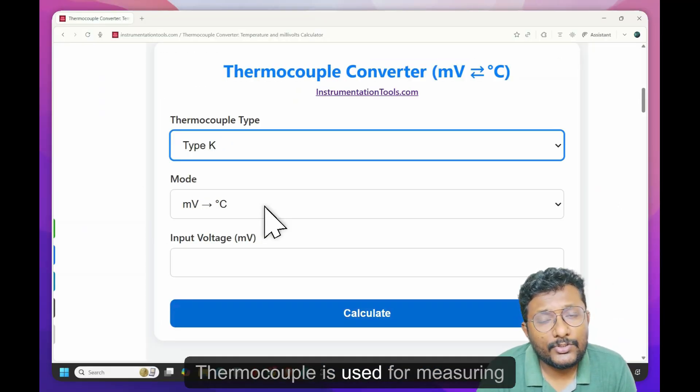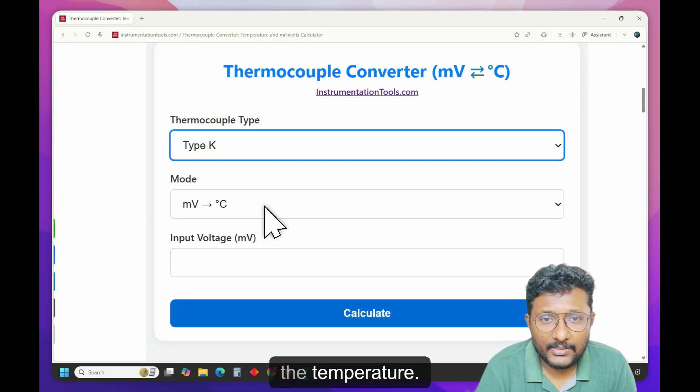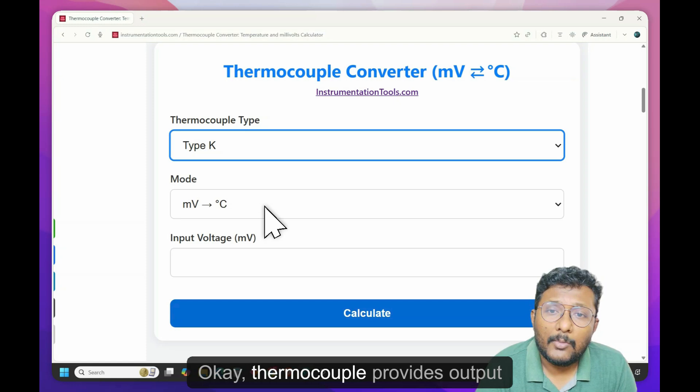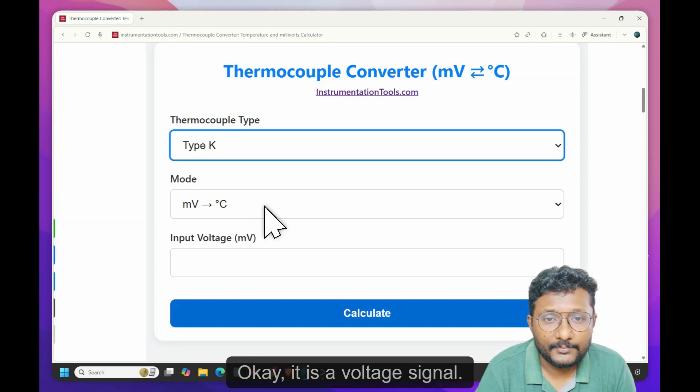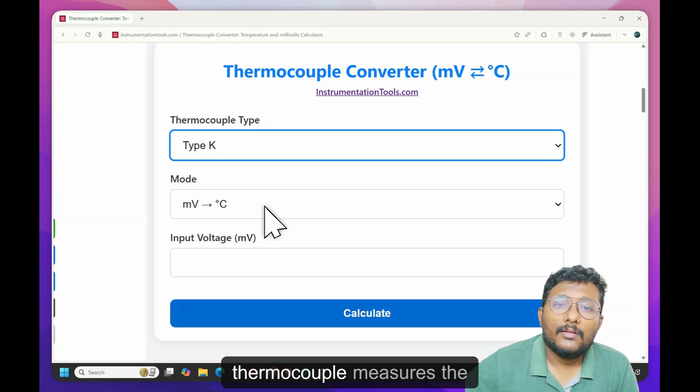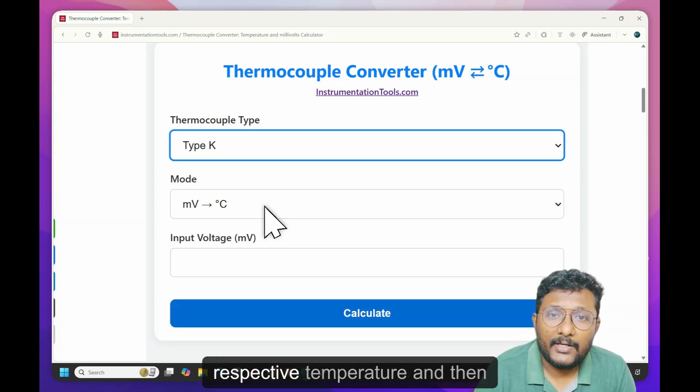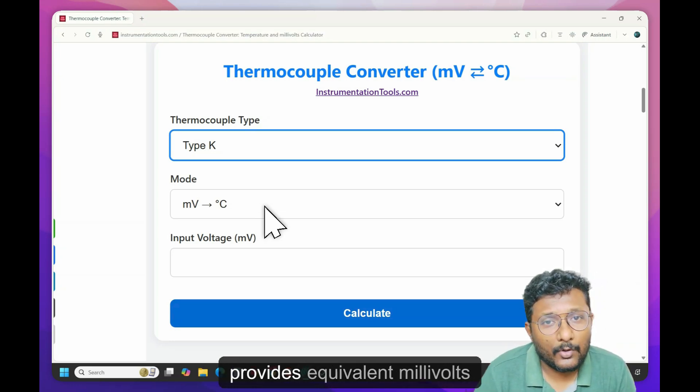Thermocouple is used for measuring the temperature. Thermocouple provides output in the form of millivolts. It is a voltage signal. Thermocouple measures the respective temperature and then provides equivalent millivolts output.